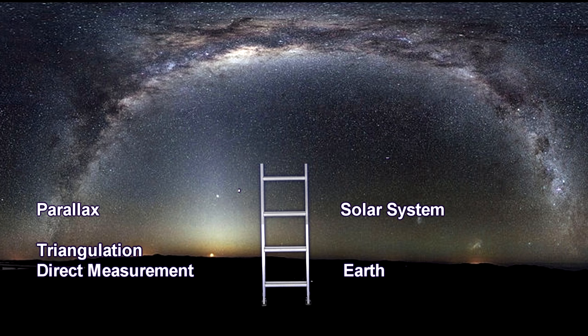But first, we'll close out our chapter on the solar system by taking a look at the heliosphere, Kuiper belt, Oort cloud, and comets.